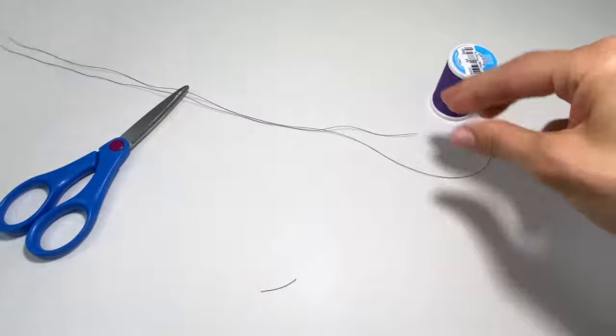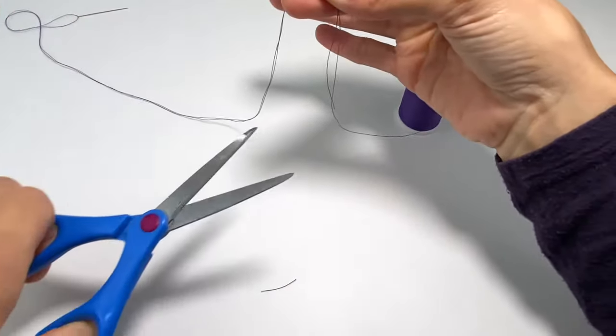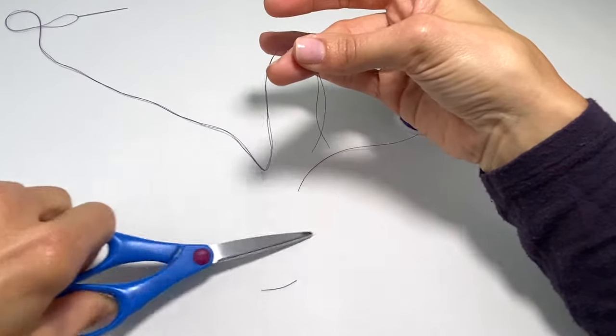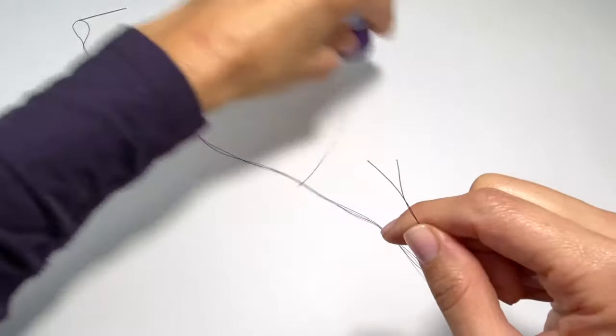This will make a stronger stitch. All the way at the end here is where you're going to cut. You're going to cut right here, and then we are going to make a double knot.